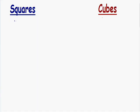The first term I want to go over is square. Whenever you square a number, that means there is a 2 exponent. For example, the number 1 squared means we have the number 1 with a 2 exponent. Another way you could say this is 1 raised to the second power. Whenever you have a 2 exponent, you multiply the number by itself 2 times. 1 times 1 is equal to 1, so 1 squared is equal to 1.